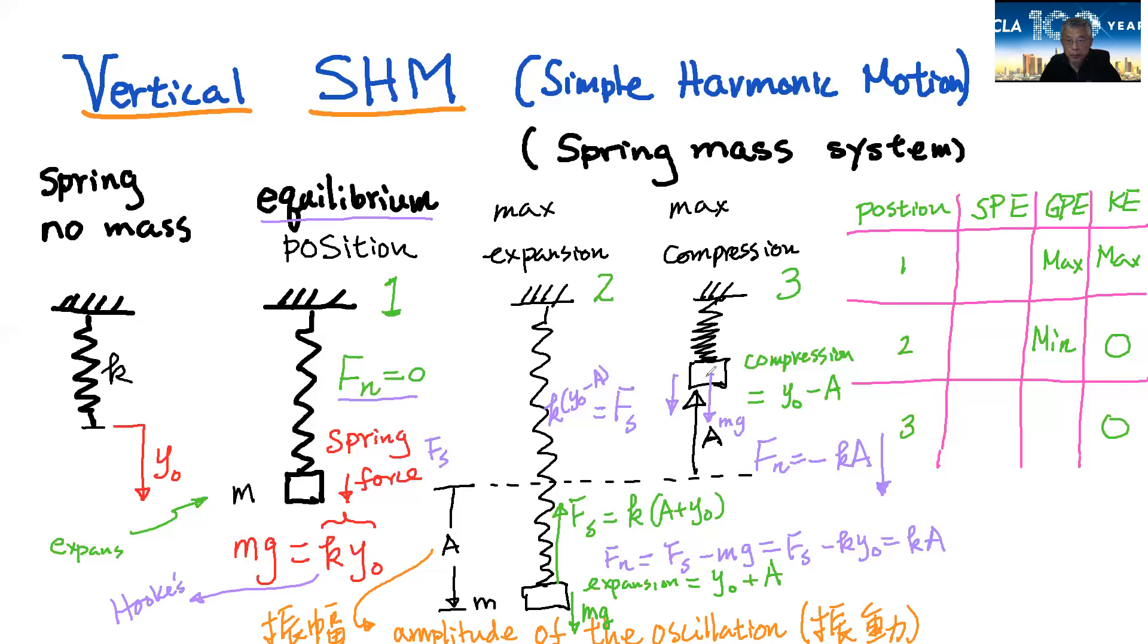Now you have the maximum compression at this point. So the compression amount right here will become, since from here, you already stretch y0 amount. And if you go back up for the A amount here, so you know the compression will be y0 minus A.